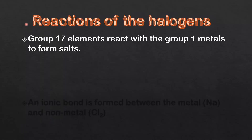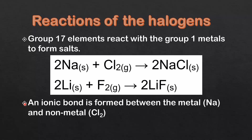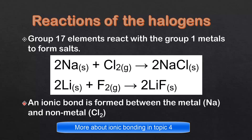Next we'll have a look at the reactions of the halogens. Group 17 elements react with the group 1 metals to form salts. Here we have sodium reacting with chlorine to form sodium chloride, and here lithium reacts with fluorine to form lithium fluoride. An ionic bond is formed between the metal sodium and non-metal chlorine.